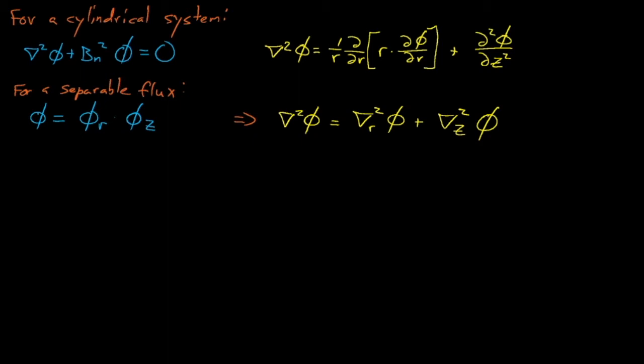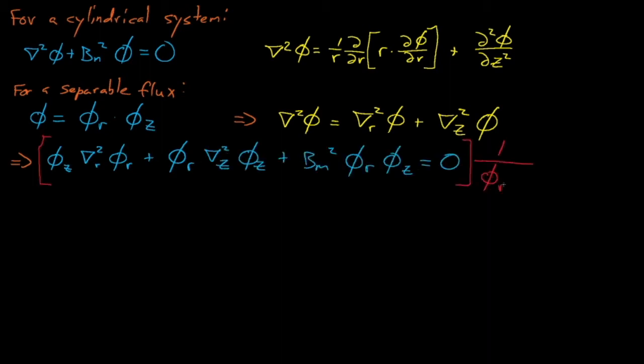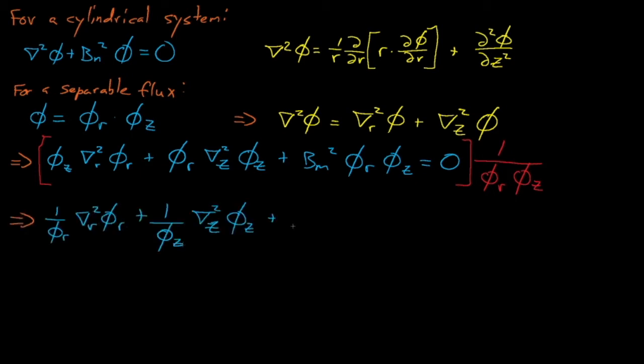If we assume that our flux is separable into its r and z components, then we can convert the Helmholtz diffusion equation into this expression, after which we divide by the overall flux in r and z, and we find ourselves with this expression, which contains one term that is a function of the radial flux and one term that is a function of the axial z-dimension flux. These two r and z components are completely independent of each other. They don't even involve the same dimensions.